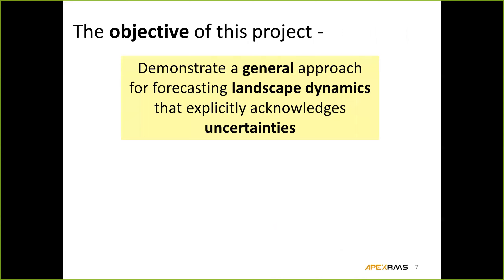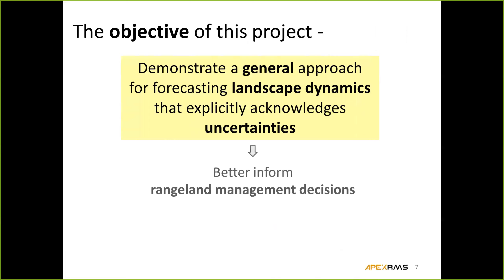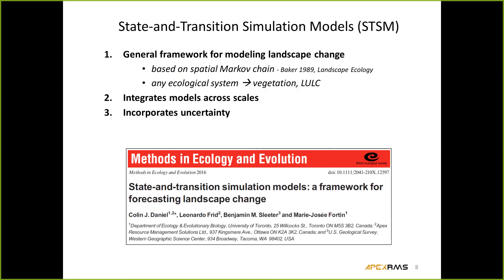The objective of this project is to develop a general approach for forecasting landscape dynamics that is explicit about acknowledging uncertainty, and to apply that approach to better inform rangeland management decisions. The approach is called state and transition simulation models, or simulation modeling. This is a general framework for making forecasts of landscape change. For those familiar with modeling, it's based on a type of modeling called spatial Markov chain modeling, and it's very general and can be applied to any type of ecological system.